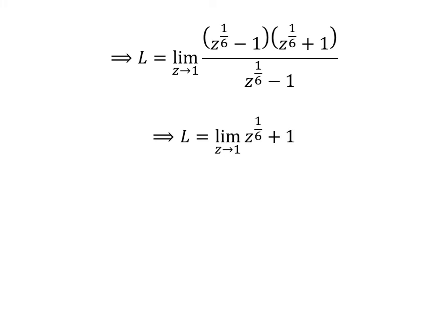Now, let us cancel out the common factor sixth root of z minus 1 in the numerator and the denominator. So, the limit L is equal to limit of sixth root of z plus 1 as z approaches 1.